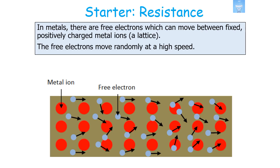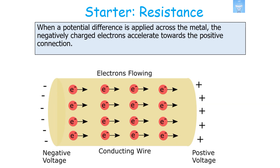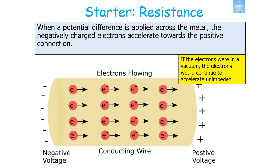In metals there are free electrons which can move between the fixed positively charged metal ions arranged in a lattice. These free electrons move randomly at high speed. However, when a potential difference is applied across the metal, the negatively charged electrons will accelerate towards the positive connection. If these electrons were in a vacuum, they would continue to accelerate unimpeded in the electrical field.